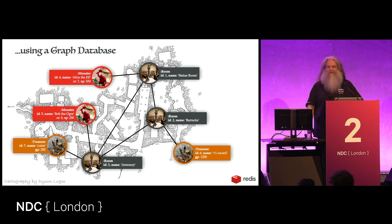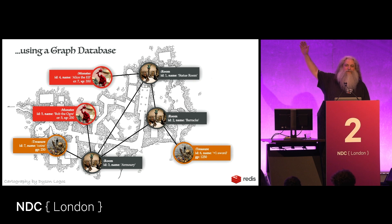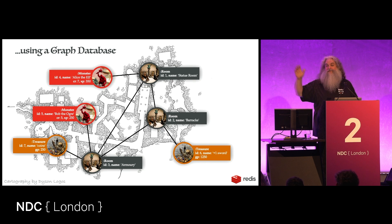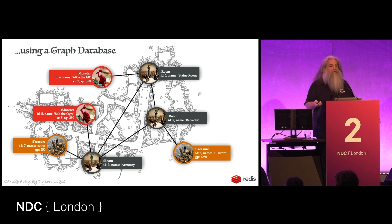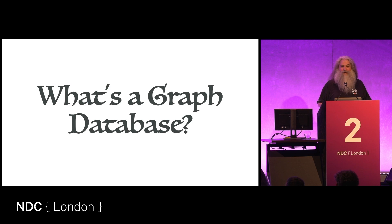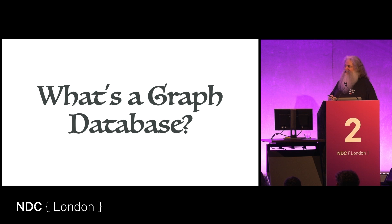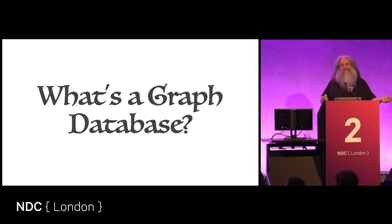I could use a relational database with a rooms table, a treasures table, and a monsters table — or I could use a graph database with nodes and relationships. How many of you have used a relational database in your career? How many have used a graph database? The whole point of this talk is to take a relational database, compare it against a graph database, show how they're similar and where they differ. This is not a talk about GraphQL — graph databases are a different thing entirely, and they're really cool.